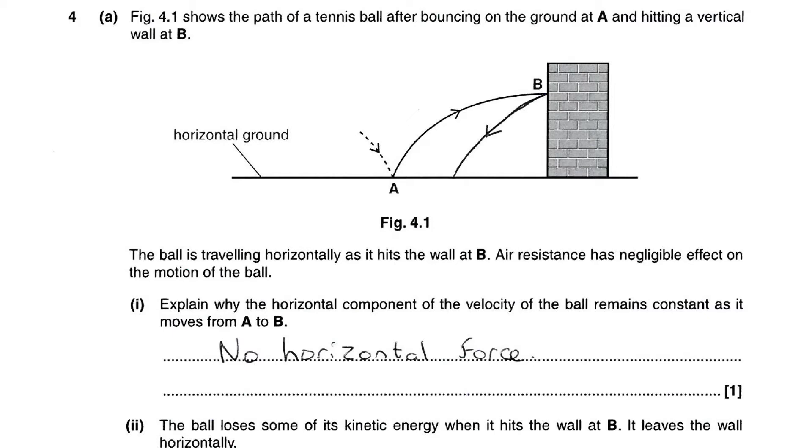Okay, so this is G481 mock paper question 4A. As we can see from the question, the ball is traveling horizontally as it hits the wall at B. The key point in this question is that the air resistance is negligible. So the question is, explain why the horizontal component of the velocity of the ball remains constant as it moves from A to B. Air resistance could be the only thing acting upon the ball to give it a horizontal force, so there is obviously no horizontal force.